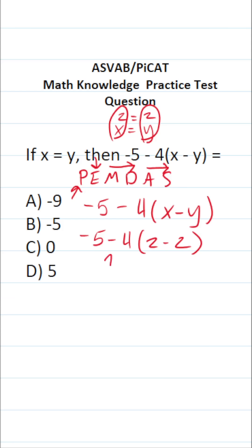So what do we have here? We have subtraction: -5 minus 4. We have 4 times something in parentheses, so we have multiplication. And then inside parentheses, we have 2 minus 2.